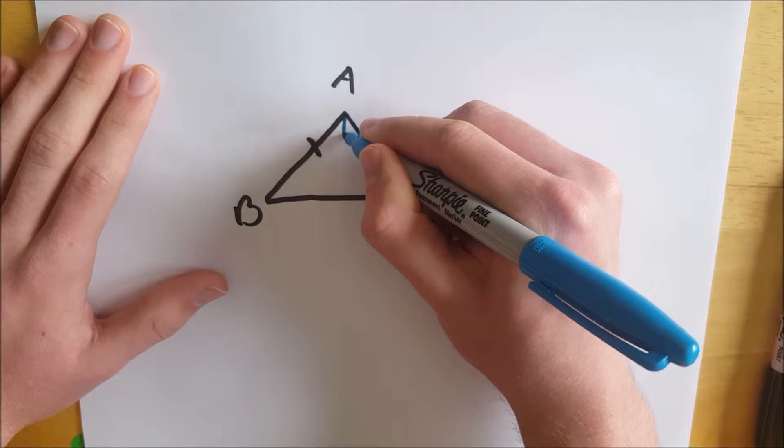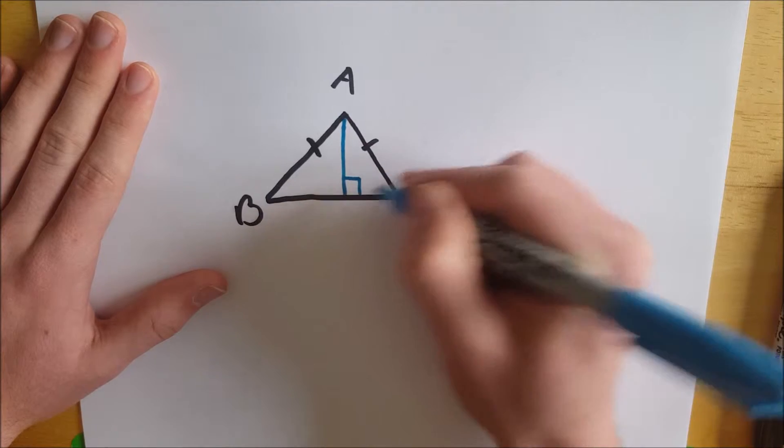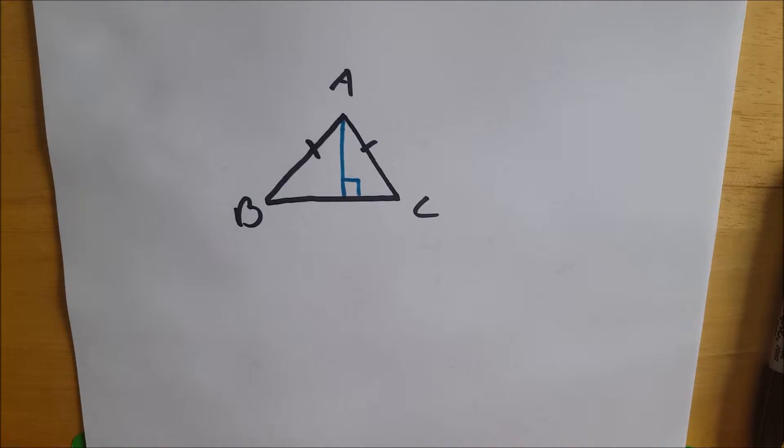So the altitude goes from A down to side BC and is perpendicular to this side and it's perpendicular over here as well. Not going to bother writing that in because it looks gross.